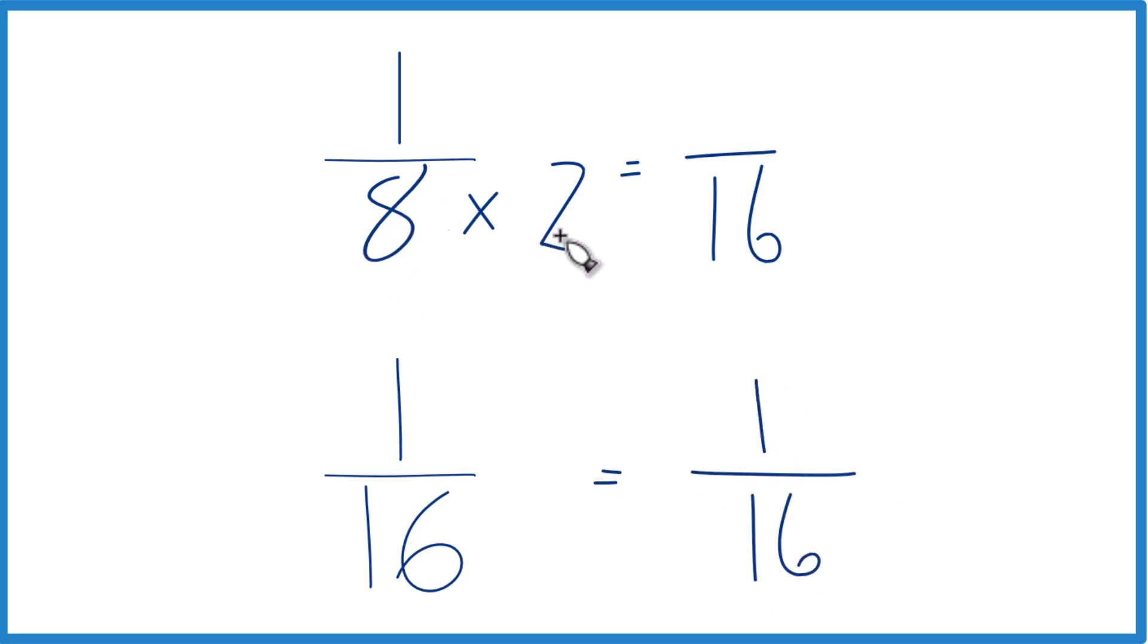And we can't just multiply the denominator by two. We have to multiply the numerator as well. That's because two over two, two divided by two is one. Just multiplying by one. Don't change the value, just the way it's represented.